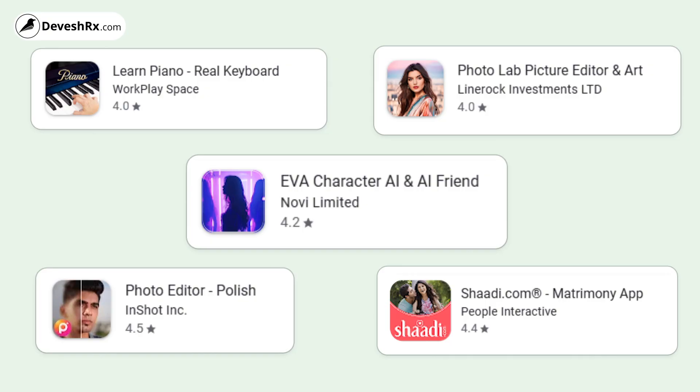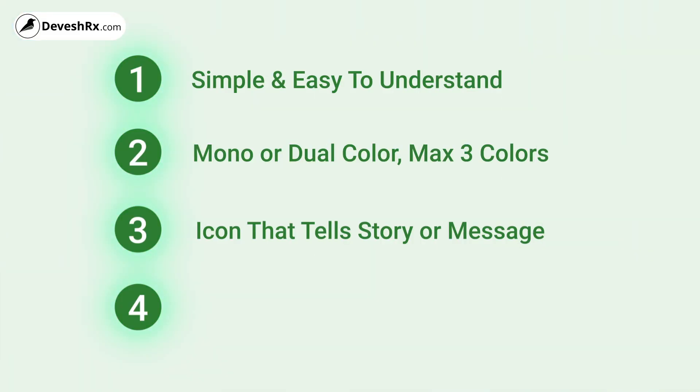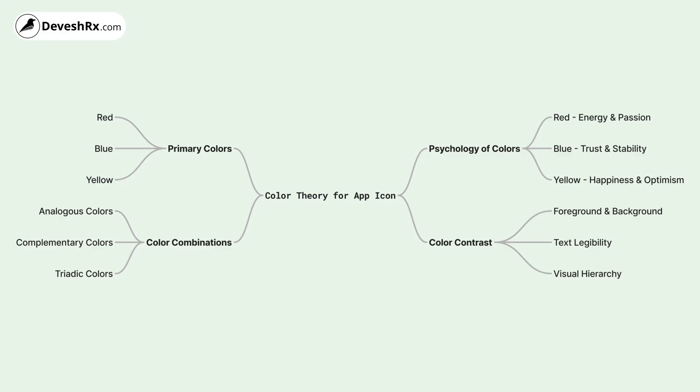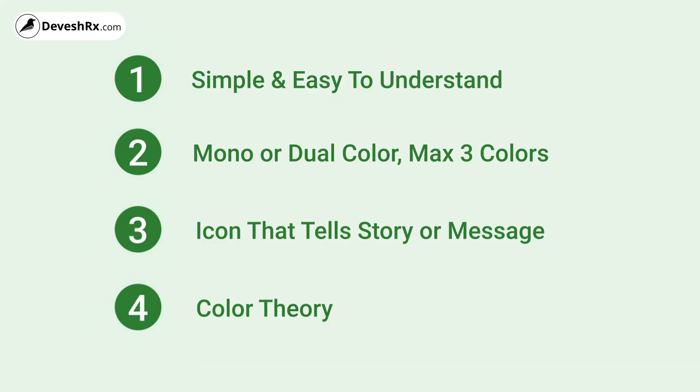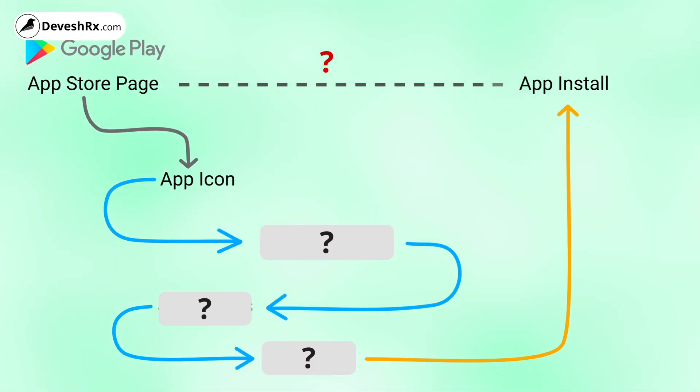Rule number four: apply color theory. Color theory is a very in-depth topic, but it's important for you to understand at least the basics and implement color theory concepts while designing your icon. These are the four general rules for designing an app icon — they are not hard and fast rules, but based on my experience they are important. You can get creative and implement your own way, but keep these four rules in mind.